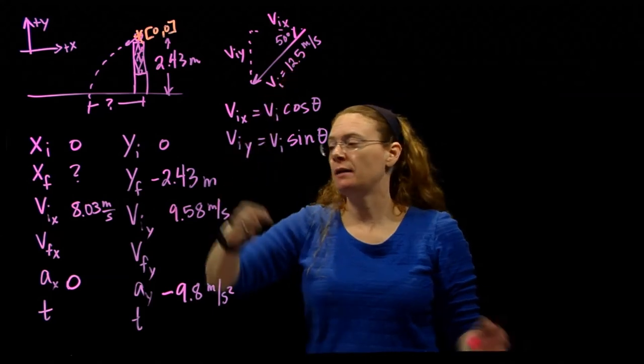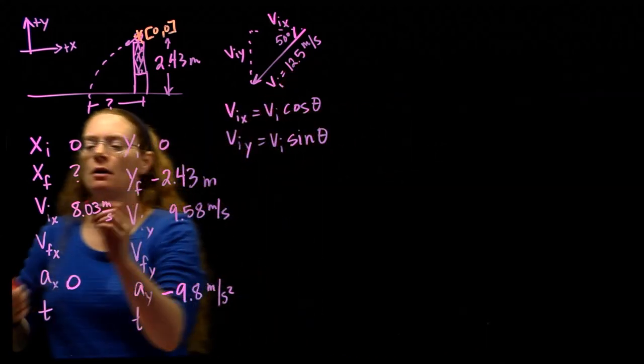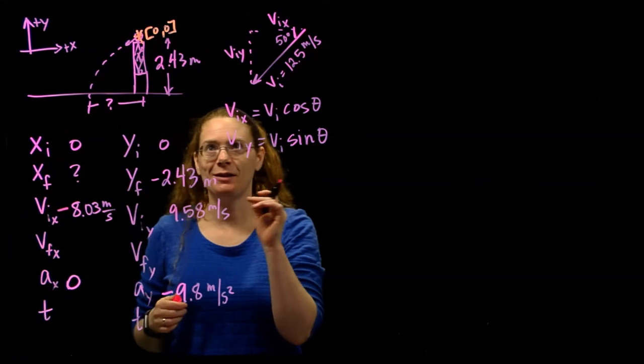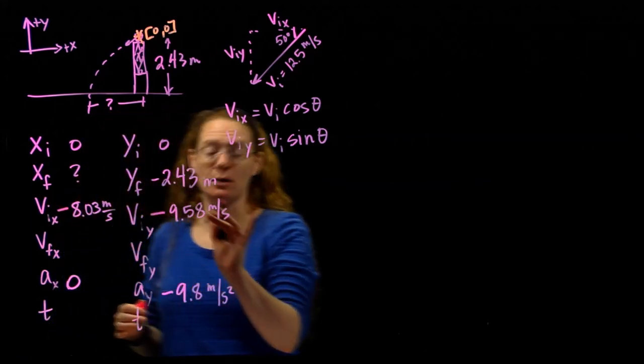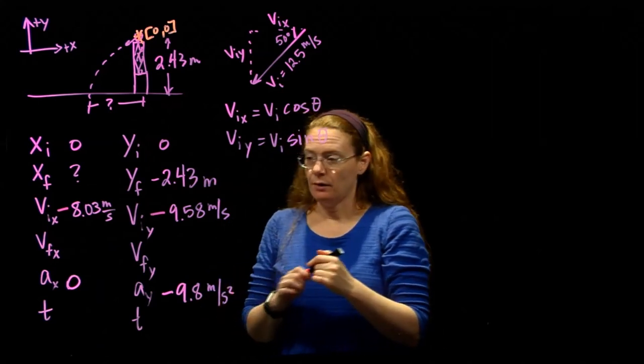We have the x component going to the left. The y component is going down. So this is going left and down, which means left, our initial velocity horizontally is negative. It's going down, so our initial velocity vertically is also negative.